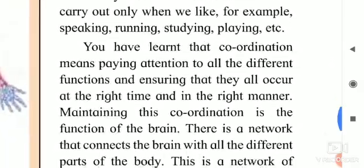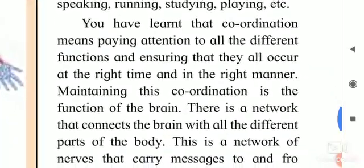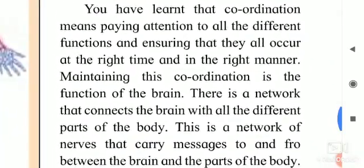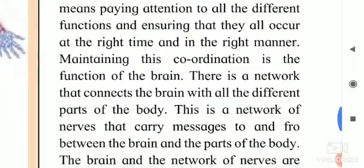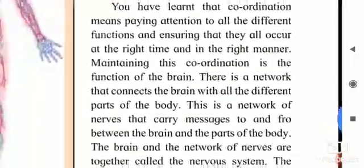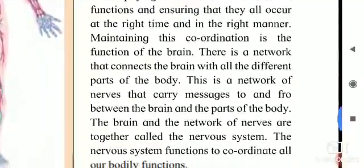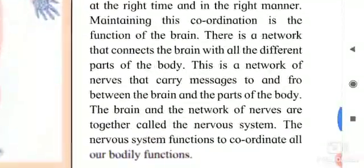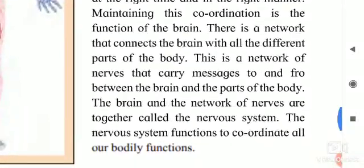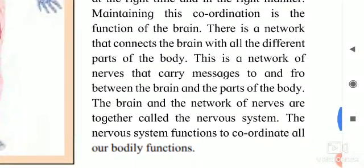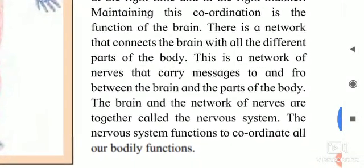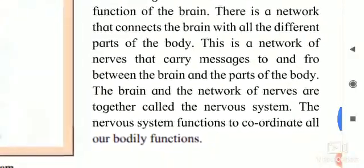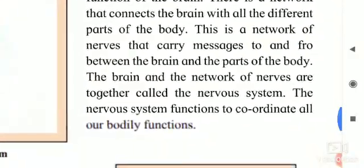You have learned that coordination means paying attention to all the different functions and ensuring that they all occur at the right time and in the right manner. Maintaining this coordination is the function of the brain. There is a network that connects the brain with all the different parts of the body — this is a network of nerves that carry messages between the brain and the parts of the body.